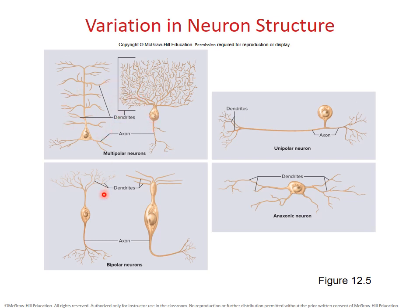Relatively fewer neurons belong to these other classes. The second most common would be a unipolar neuron with a single extension, which then splits into dendrites and axon. The dendrites are restricted to this receptive area, and the rest of this fiber is the axon. Bipolar neurons have a single dendrite and a single axon. And then the very rare anaxonic neurons, which only have dendrites and no axons. So that takes us to Objective 53.